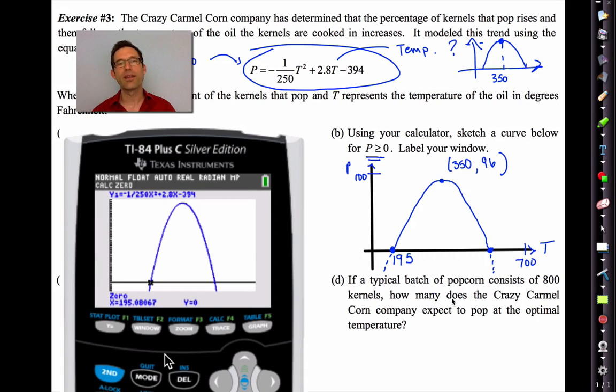Then it asks for a guess. I just need to move that cursor closer to the zero I'm looking for rather than the zero I'm not yet looking for. And hit enter. And it looks like we have temperature of 195 to the nearest degree. What I'd like you to do now is I'd like you to use the zero command to find the larger one. Hopefully, you found 505. Now, think about this for a second. This is kind of cool. It means for any temperature below 195 or above 505, no popcorn is going to pop. But as soon as you get above 195 and below 505, then you're going to have kernels pop.